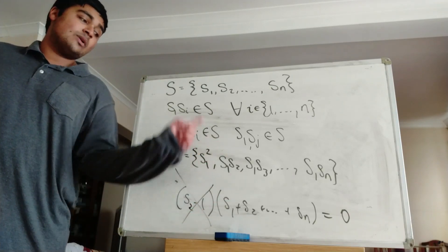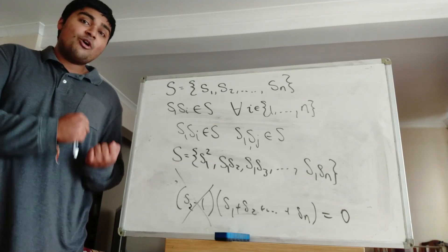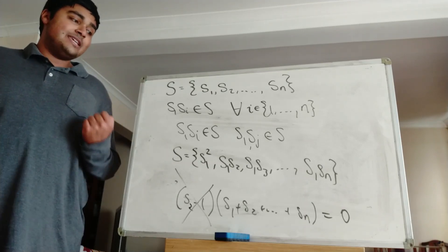And we get S1 plus S2 plus so on, all the way up to SN is equal to 0. So we found the sum of the elements in our set, and that's always going to be equal to 0.